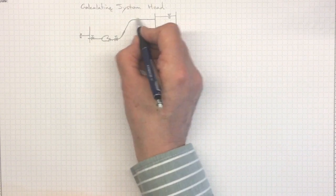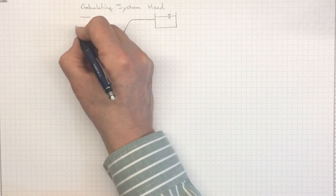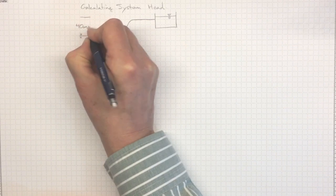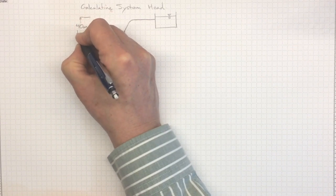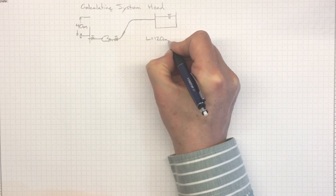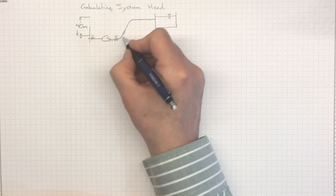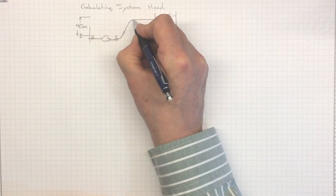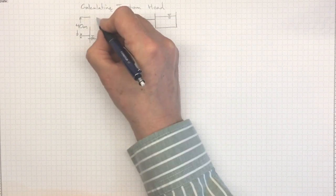Now, we need to put some numbers on our elevation change. Let's assume we're going up by 40 meters. And the total length of the pipe, let's say it's 120 meters long, so not too far. We've got some elbows here, a couple of 45 degree elbows.